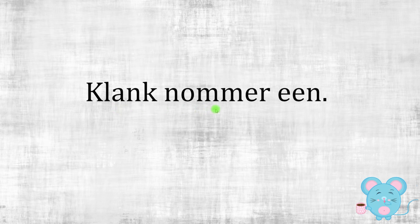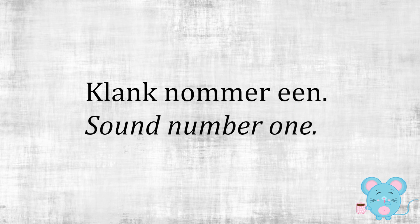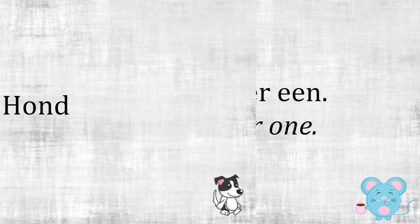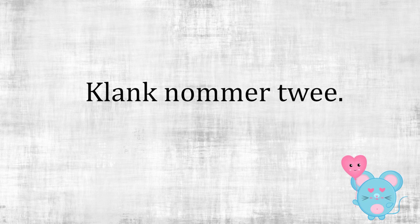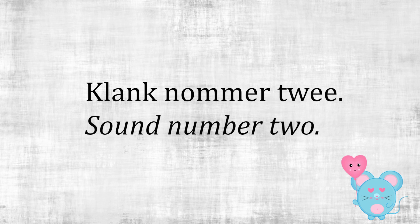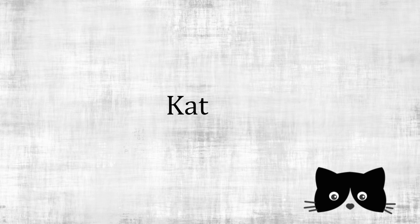Klank nommer een — Sound number one. Dit is 'n hond — It is a dog. Klank nommer twee — Sound number two. Dit is 'n kat — It is a cat. And if we speak really fast it will sound like this: Dit is 'n kat.